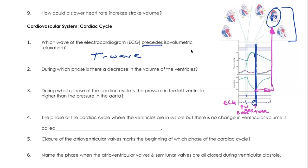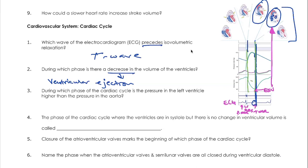The next question asks during which phase there is a decrease in the volume of the ventricles. That's going to be during ventricular ejection — the ventricles are ejecting blood during this period. This is really equivalent to stroke volume, because that is the volume of blood being ejected. So ventricular ejection ultimately equals stroke volume.